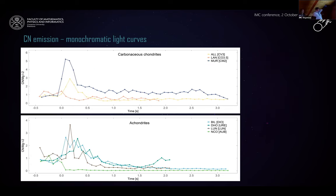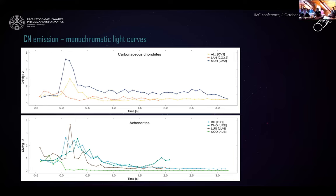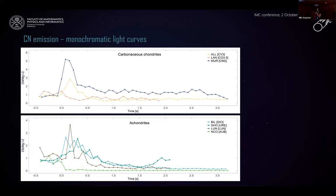Taking a closer look at monochromatic light curves for individual types of meteorites, we start with meteorites with the richest CN signal — carbonaceous meteorites. We observe the strongest CN emission in CM-group meteorites, and then in CI and CO groups. In the case of achondrites, we observe more variable behavior of CN emission over time.